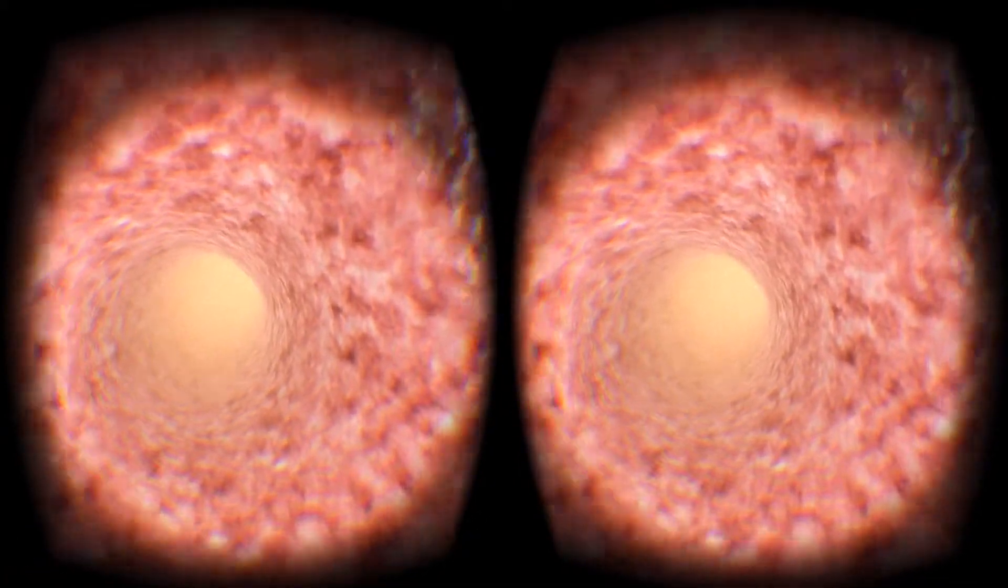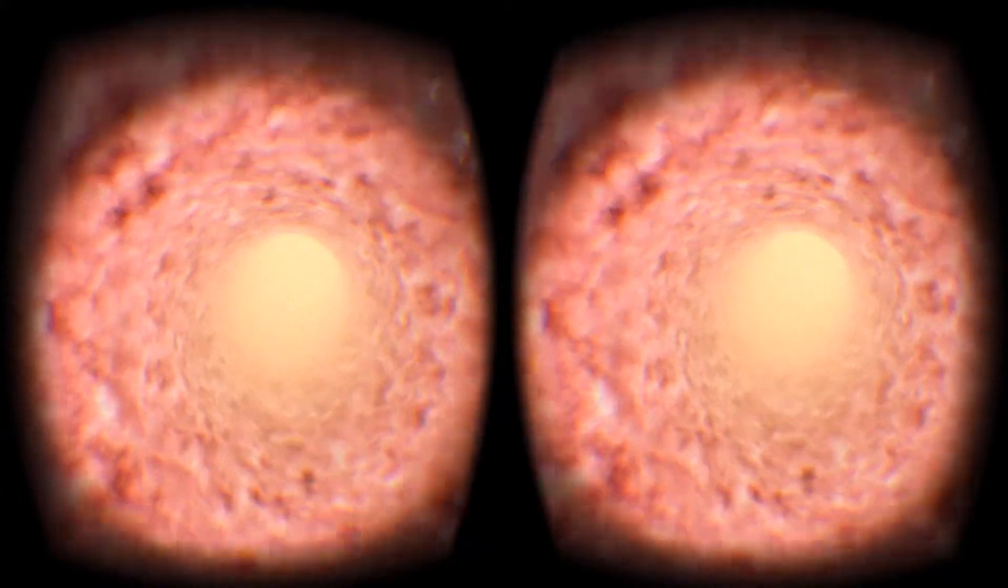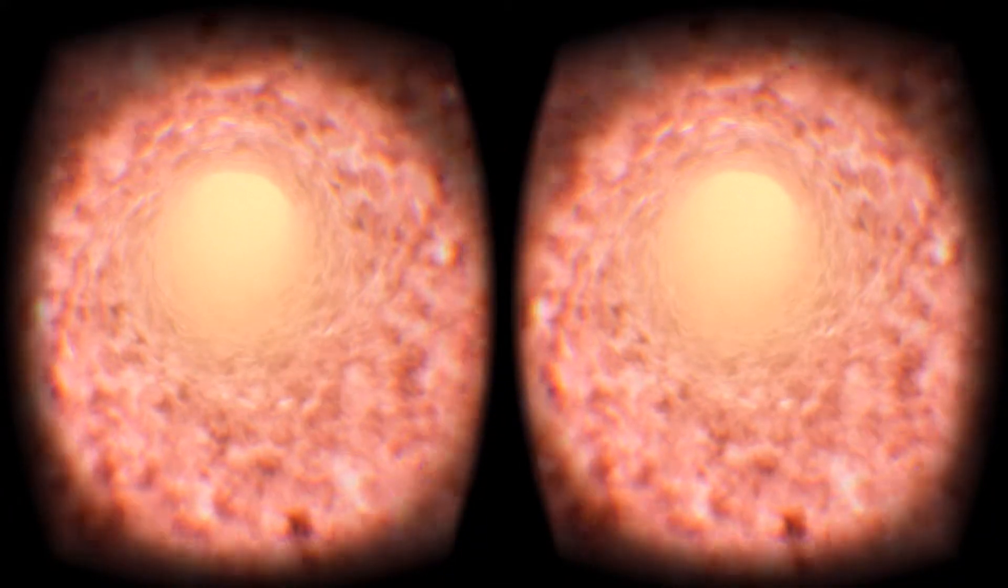Blood plasma is the pale yellow liquid component of blood that holds all the blood cells in suspension. It makes up about 55% of the body's total blood volume.